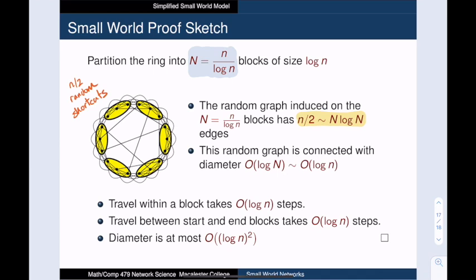Now, since the random graph on these mega vertices is connected, that means we can travel between any of them. Furthermore, we can travel between them in log capital N steps, which is also log little n steps. Furthermore, paths between these mega vertices have length log capital N. And log capital N is actually big O of log little n. Therefore, we can travel between blocks in at most order log n steps.